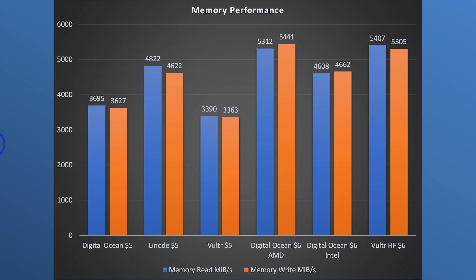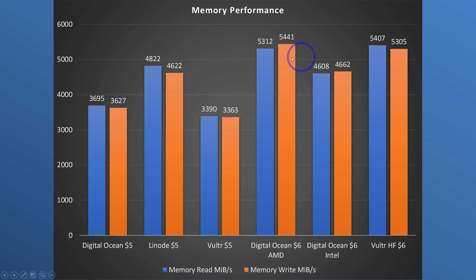Next up we have our memory performance. There wasn't as much of a difference here. DigitalOcean's AMD Droplet and Vulture High Frequency did pretty well — Vulture with a slightly faster read time and AMD with a slightly quicker write time. But everyone was quite similar. In terms of having pages cached into memory, all of these are going to do pretty well. There's not that much difference, just a slight edge with DigitalOcean Premium and Vulture High Frequency.